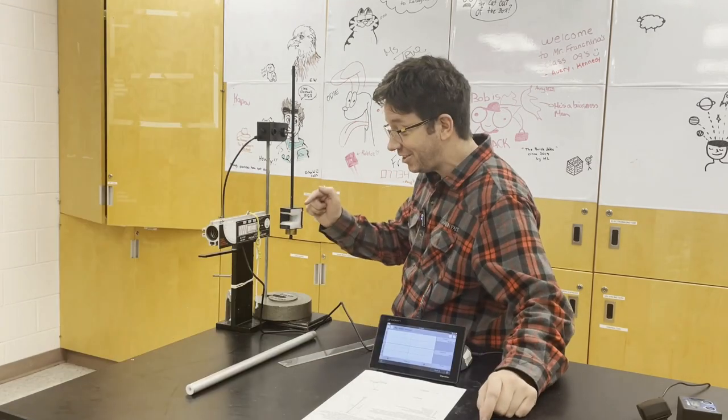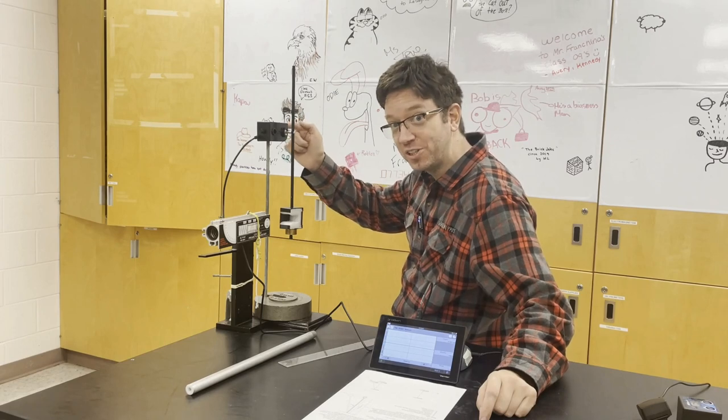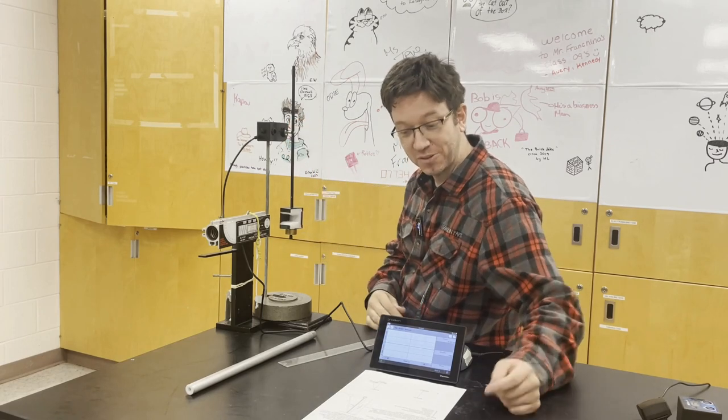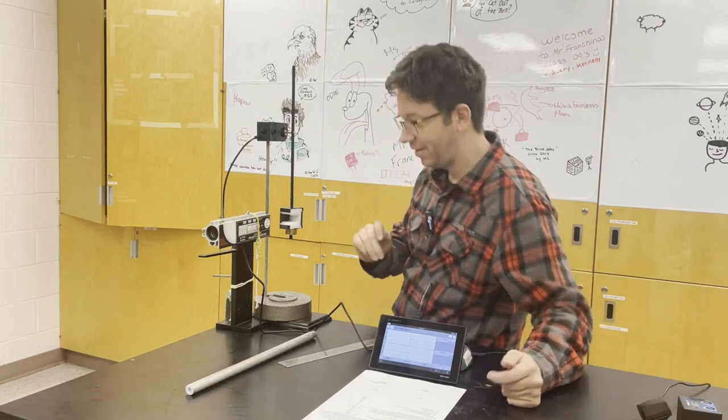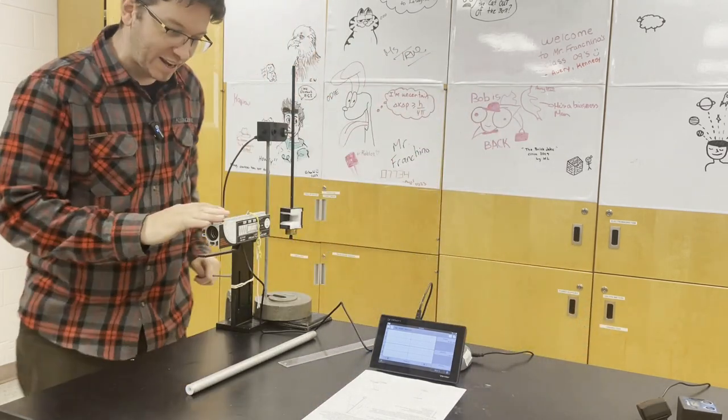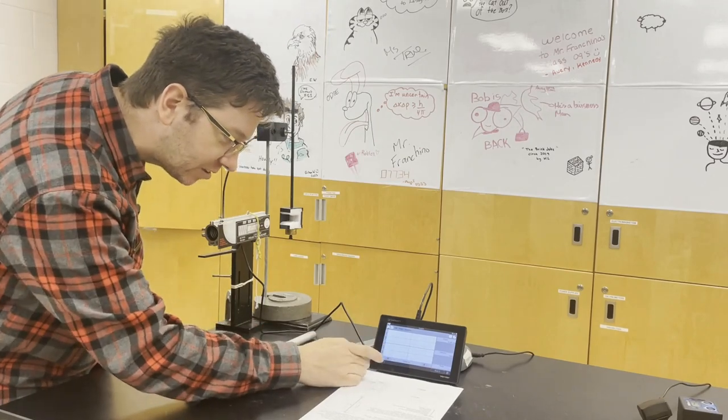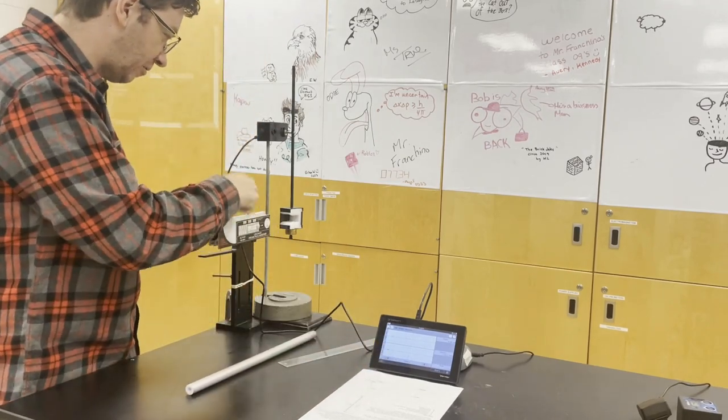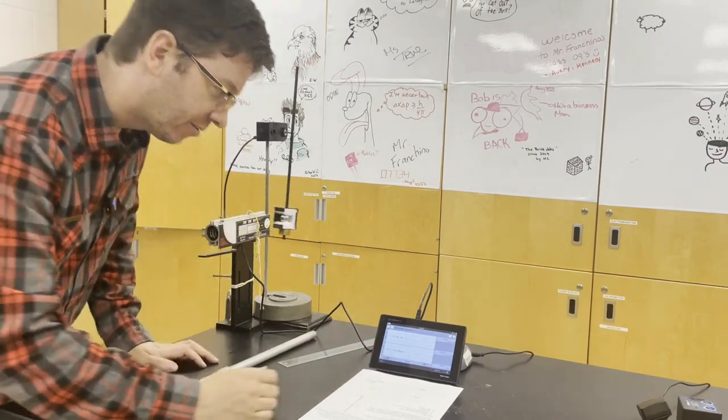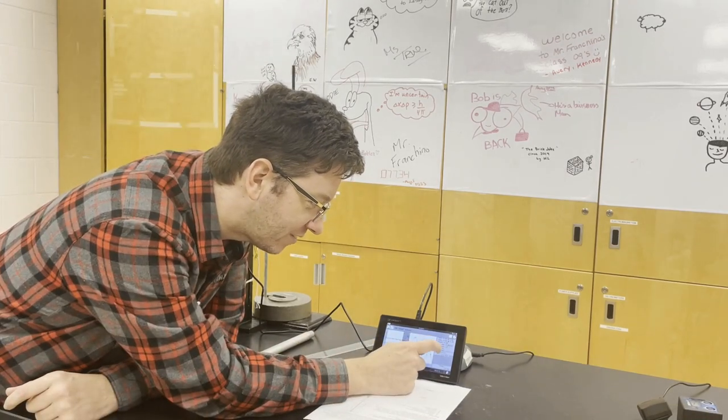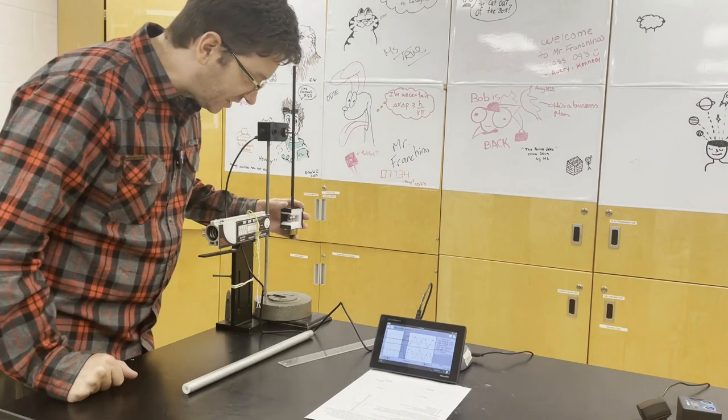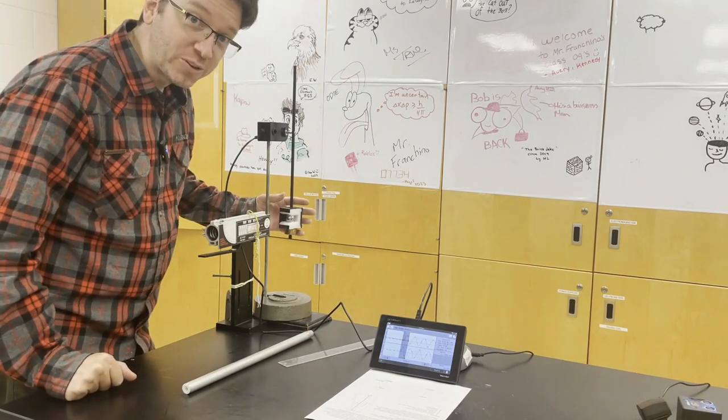So attached to our pendulum is a rotary motion sensor, and it's going to figure out the angle that it goes through, and the display is going to be right on here. So let's try our first run. We have it on short range and we have 0.65 radians. Now 0.65 radians is about 37 degrees.